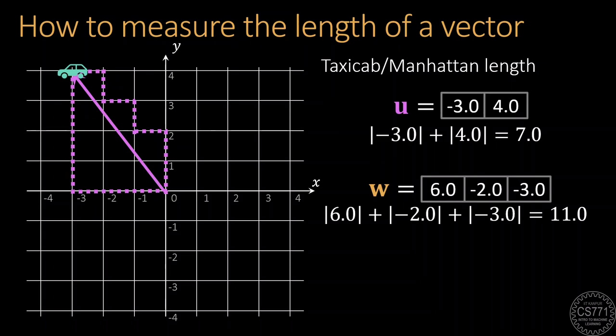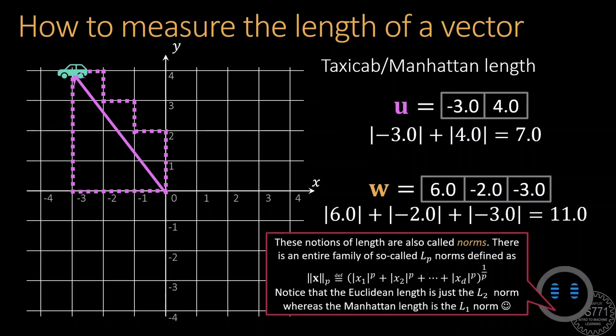Now, it turns out that these notions of length, Euclidean length, taxicab or Manhattan length, these are what are called norms. In fact, there's an entire family of so-called LP norms that are defined as follows. To find the p-th norm of a vector, we take each coordinate of the vector, take its absolute value, raise it to the power p, add up all the values and take the p-th root of the sum. Notice that if p equal to 2, we get the Euclidean length and if p equal to 1, we get the Manhattan length.